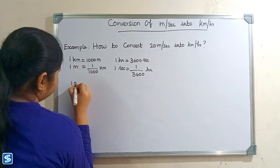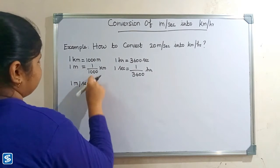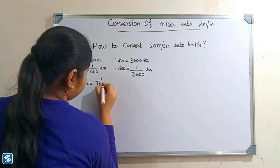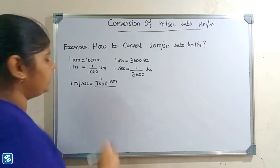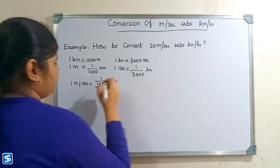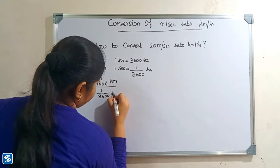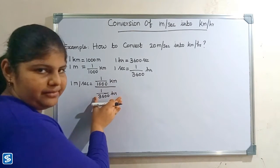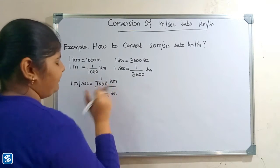So 1 meter per second is equal to — here 1 meter is 1 by 1000 kilometer — so 1 by 1000 kilometer divided by 1 by 3600 hours. To divide a fractional number by another fractional number, we have to multiply the first fractional number by the reciprocal of the second fractional number.